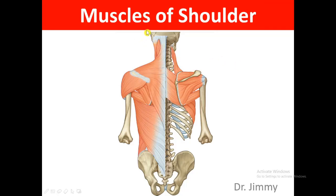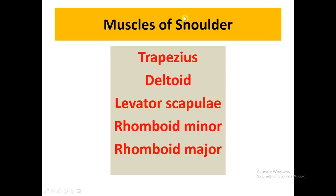We're going to talk about the muscles of the shoulder. This classification is mentioned in Gray's book, which we are following, so different writers may have different classifications. In the muscles of the shoulder, we have five muscles: first, the trapezius; second, the deltoid; third, the levator scapulae; fourth, the rhomboid minor; and fifth, the rhomboid major.